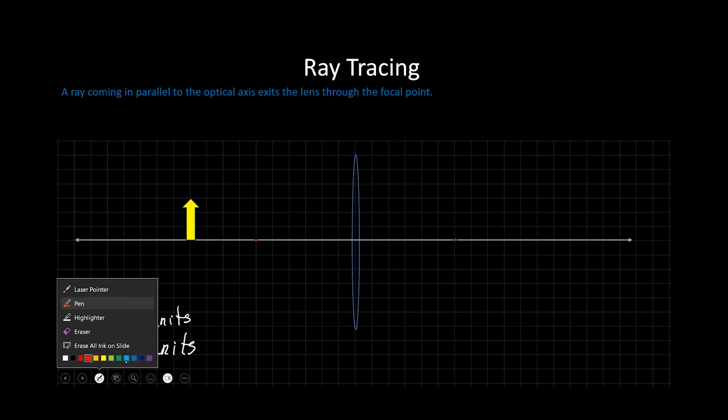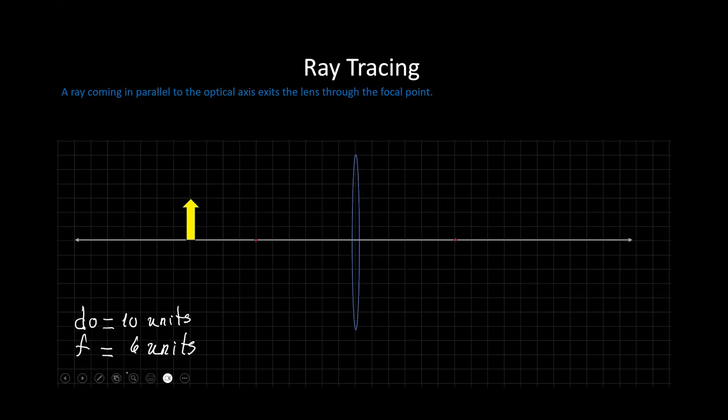So let's see if we can pick that color maybe right here. So from the tip, remember rays are going in all directions. There is one ray that is going to be parallel to the optical axis like so. But when it hits the lens, it exits the lens through the focal point. Here's the other focal point. So now we have to make sure that we draw it straight and it exits the lens through the focal point. That is the first ray.